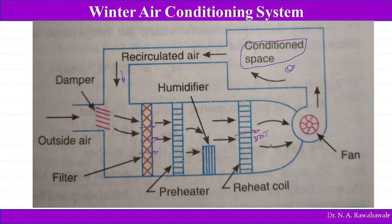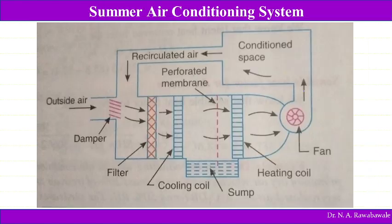In winter, the outside dry bulb temperature is lower, so we need to increase the dry bulb temperature of the room as well as the humidity. Winter humidity of air is low, so the humidifier and heater play very important roles to increase both temperature and humidity. The filter helps maintain purity of air, while the blower helps maintain the velocity of air into the conditioned space. This is what is known as the winter air conditioning system.